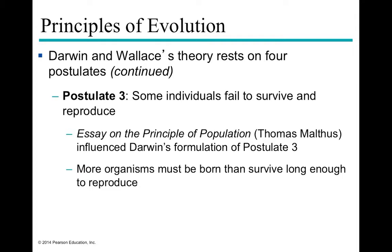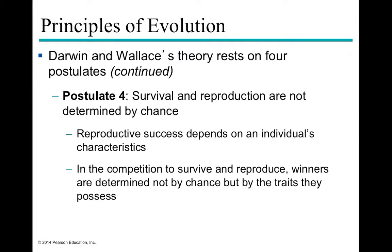Postulate three: some individuals fail to survive — there is selective pressure in the environment, such as predation on snails. This pressure acts only on reproductive fitness: if you're eaten after having offspring, you still achieved reproductive success. Organisms must survive long enough to reproduce. Postulate four: survival and reproduction are not random chance. We're not factoring in random events like being hit by a bus. Winners are determined by their specific characteristics that increase reproductive fitness, not by chance alone.